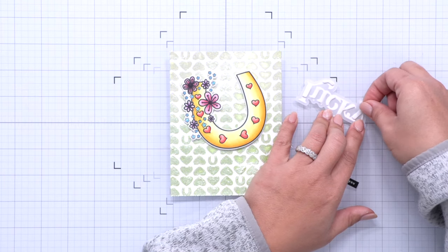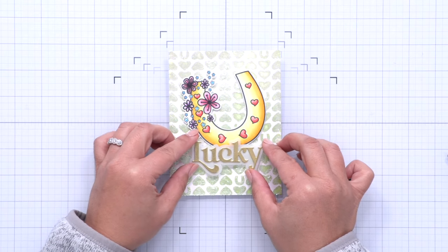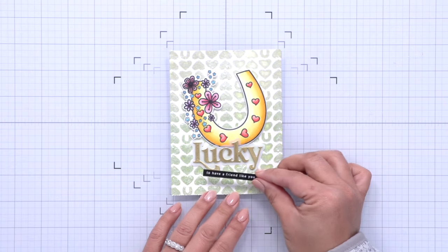So I'm going to do that and on the back side I do attach some thin strips of 3D foam adhesive so that it kind of matches the height of that horseshoe.